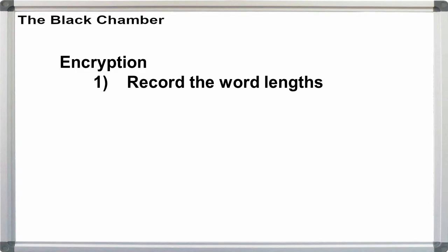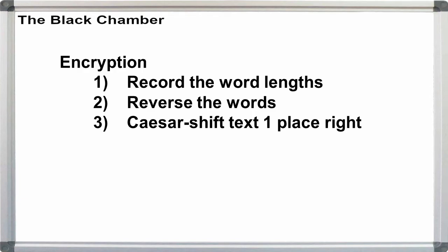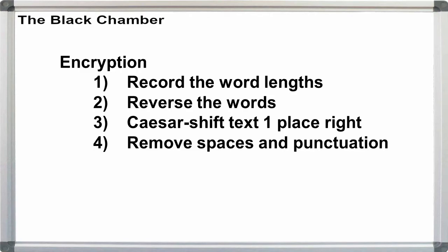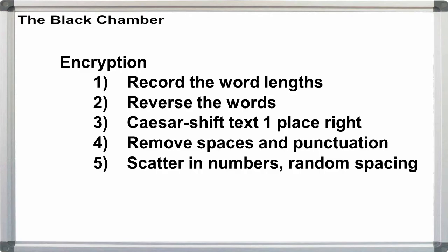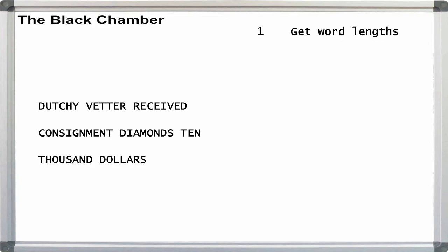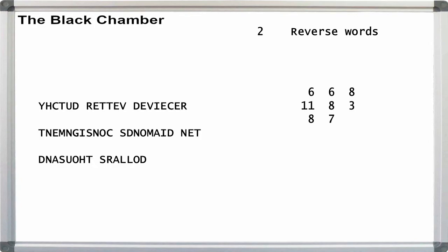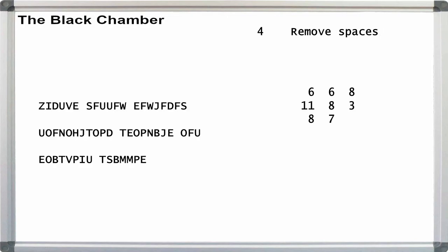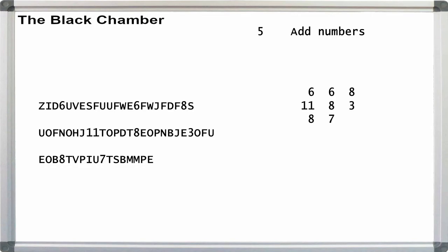Encrypting plain text with this method is pretty simple. Get the letter counts of all of the words in the message. Reverse each of the words in their positions in the message. Caesar shift the message one position to the right so that A equals B. Remove the spaces. Scatter the numbers through the message in order but with random spacings. Give the message to a friend.